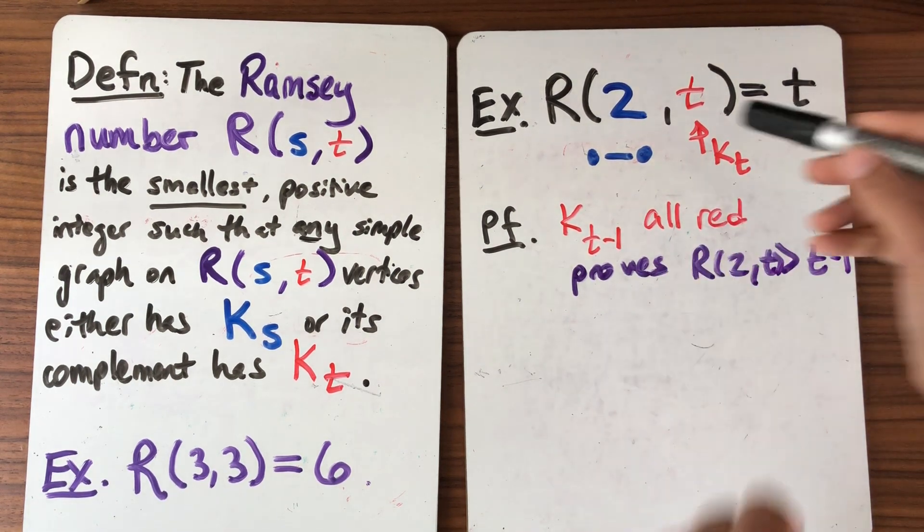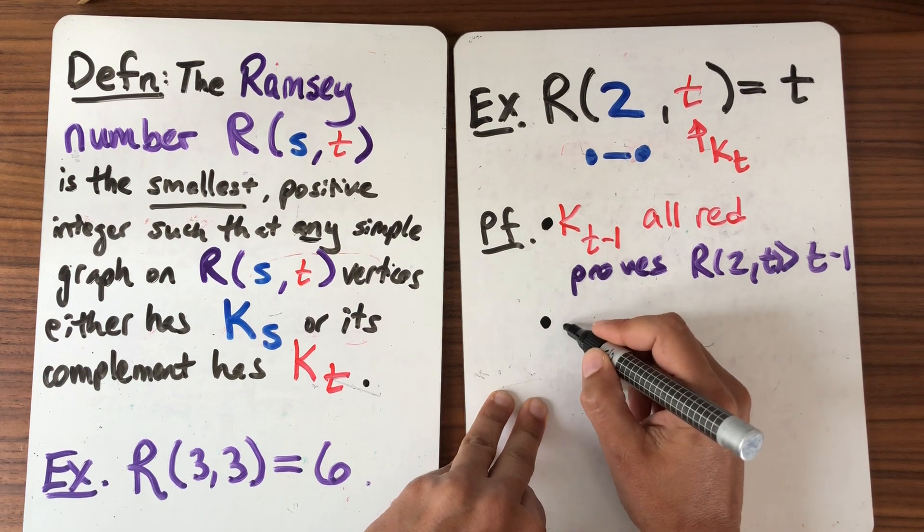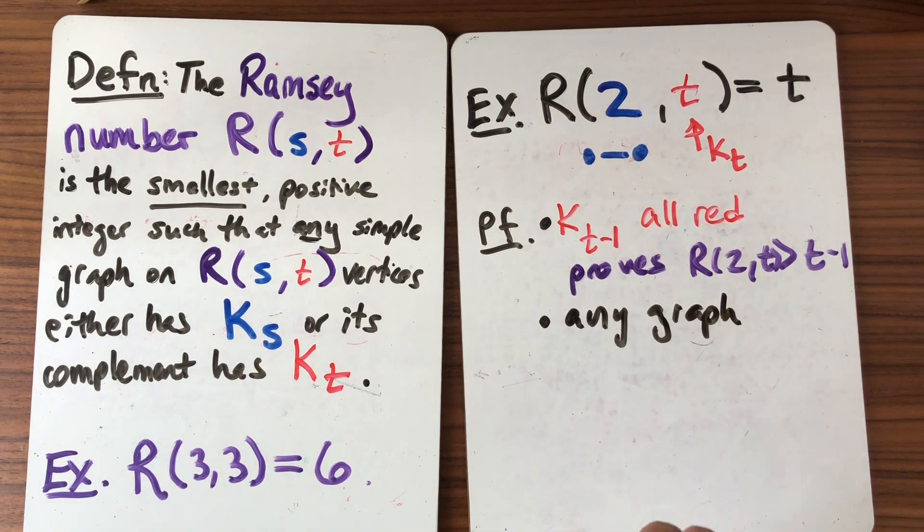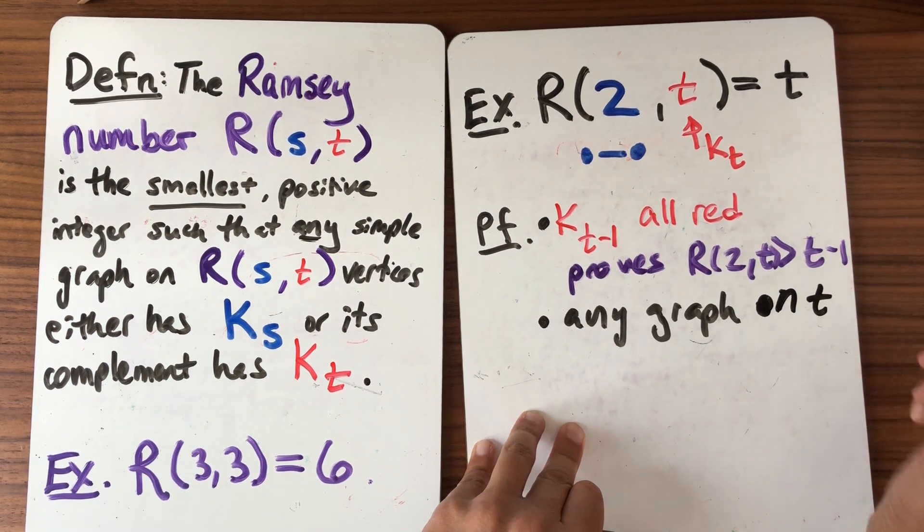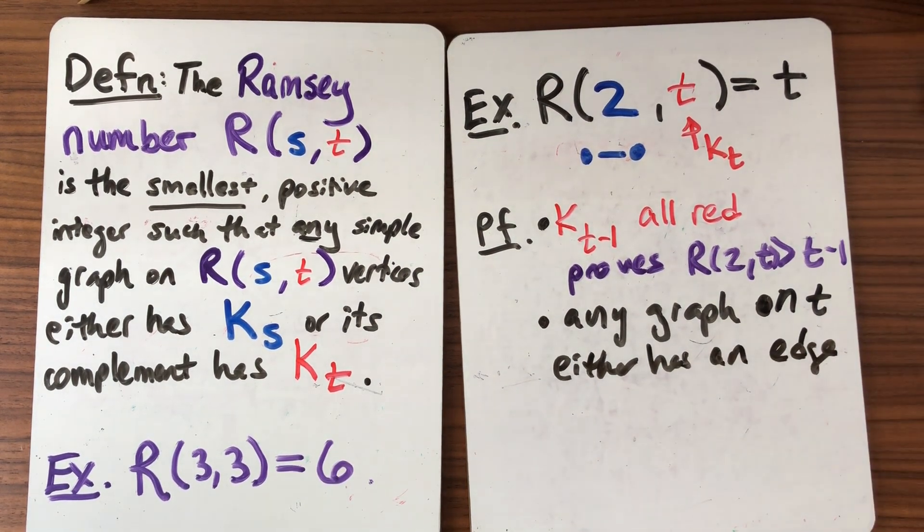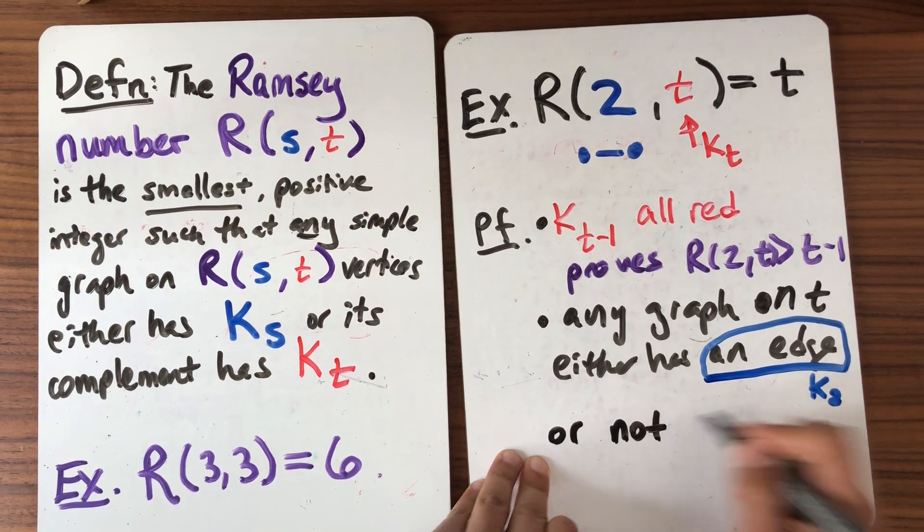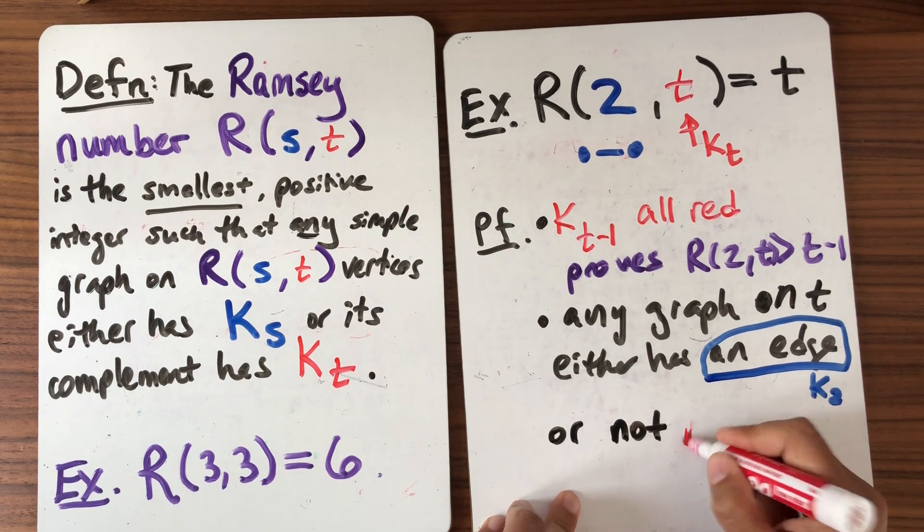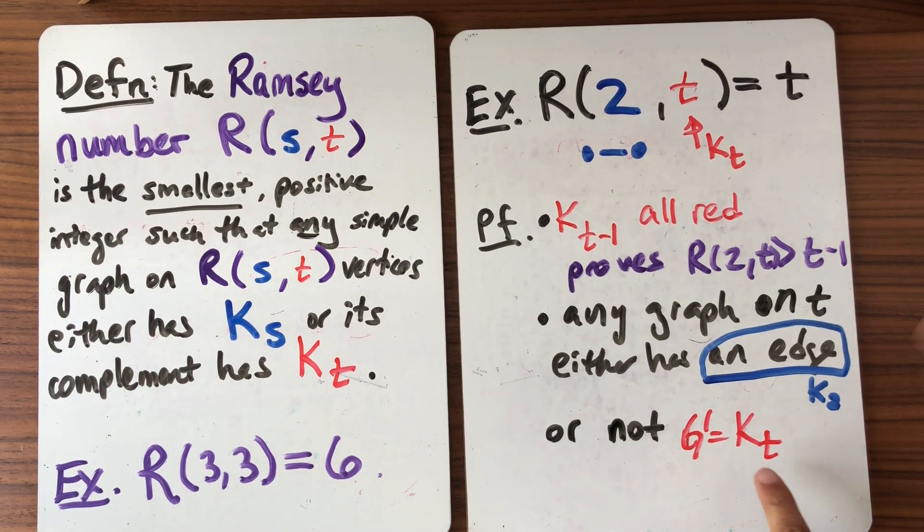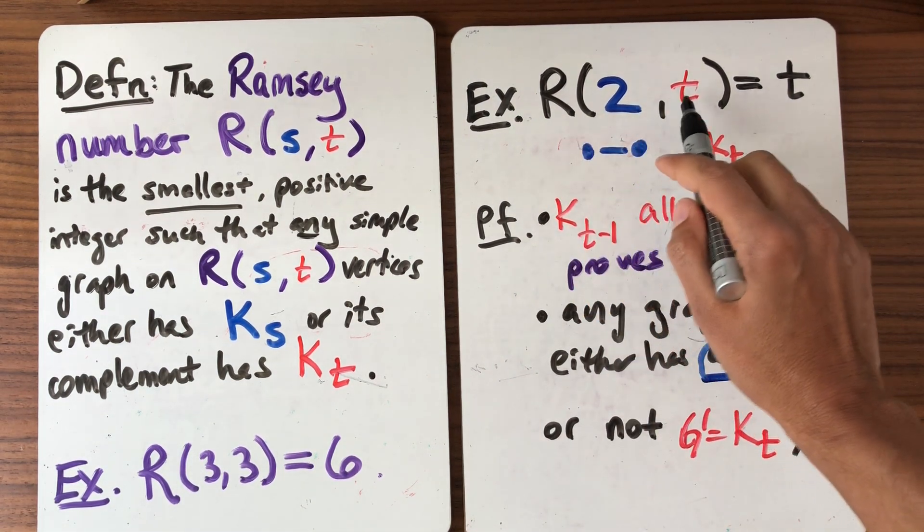This proves that R(2,t) is bigger than t minus 1. Okay so here to prove it is actually equal to t the next step, so that's one part of my proof and the half of my proof is any graph let's say on t vertices either has an edge so that would be like the case of saying g and I get my K_2 or not. Not means that the complement of the graph, that would mean that g prime is equal to K_t the complete graph. So I either get a blue K_2 or I get a red K_t and that's the proof that the Ramsey number (2,t) is equal to t.